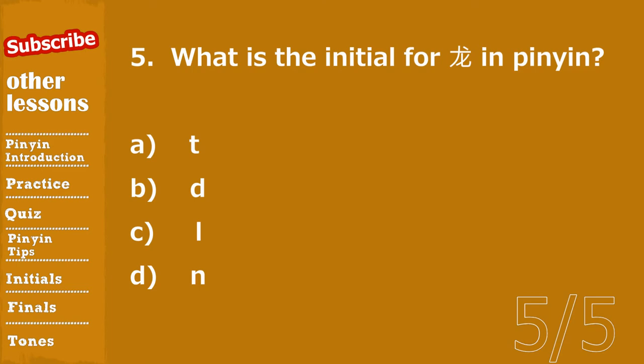Question number five. 第五题. What is the initial for 龙 in pinyin? A. (option), B. (option), C. l, D. n.